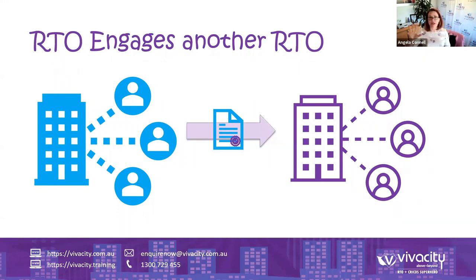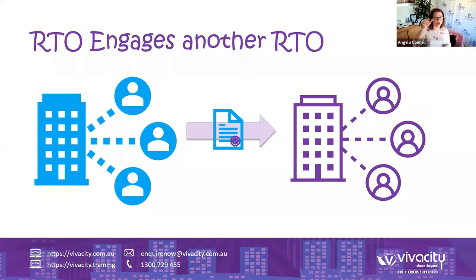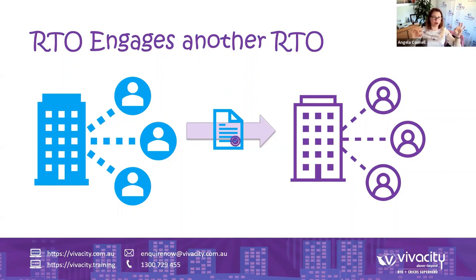As the principal RTO, you're signing off on everything, keeping all the data in your database, keeping a copy of all the assessments (which can be electronic, not necessarily paper-based), and also sufficient information to be able to do a certificate reissue. The partner or third party RTO would be required to use your enrolment form, but you can co-brand it — you can have both logos on there, or have the logo of the third party RTO with the RTO ID of the principal RTO on the document. You can also issue a co-branded certificate that has the principal RTO's logo and all legal details, but also includes the logo of the third party RTO.